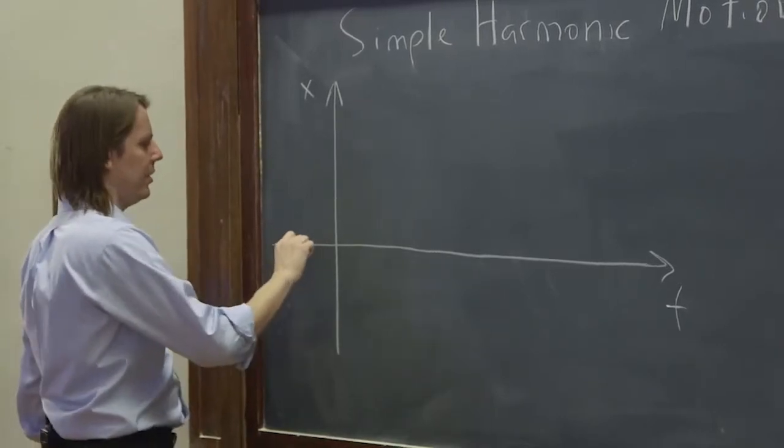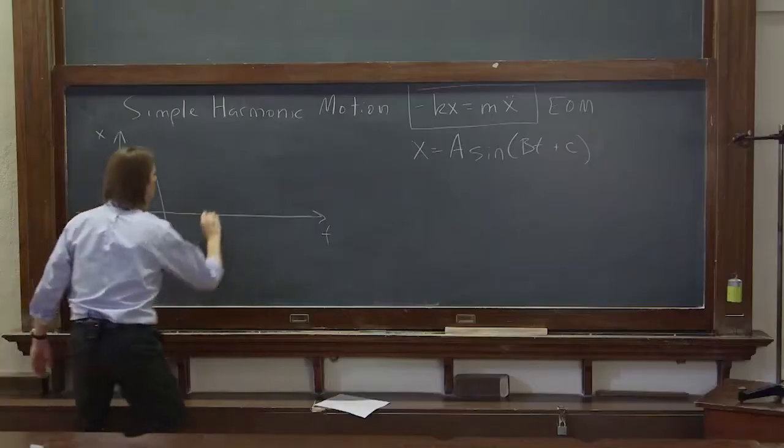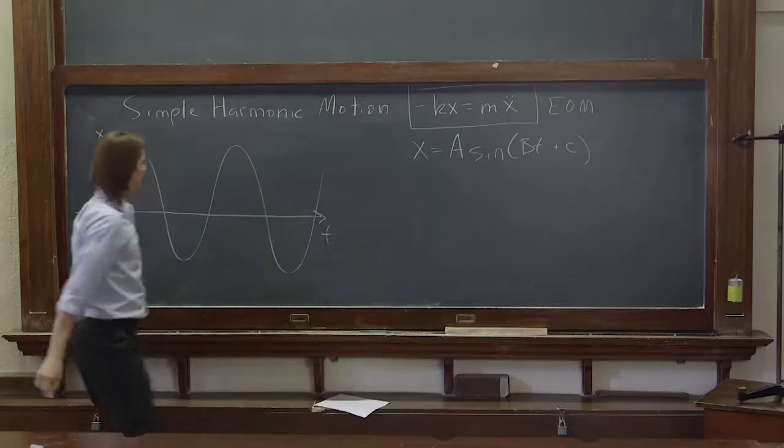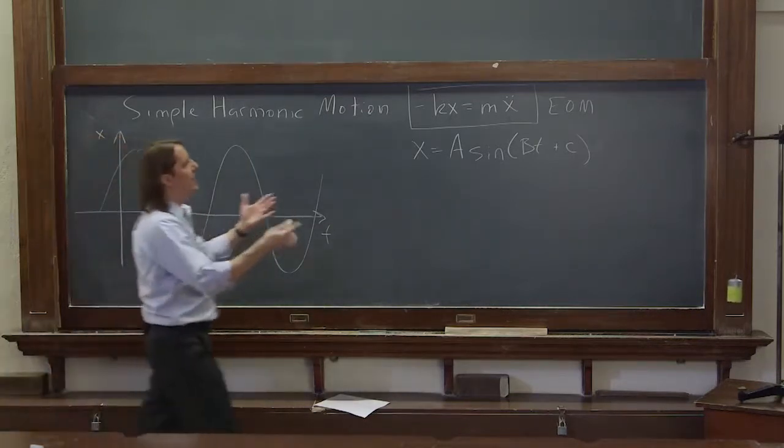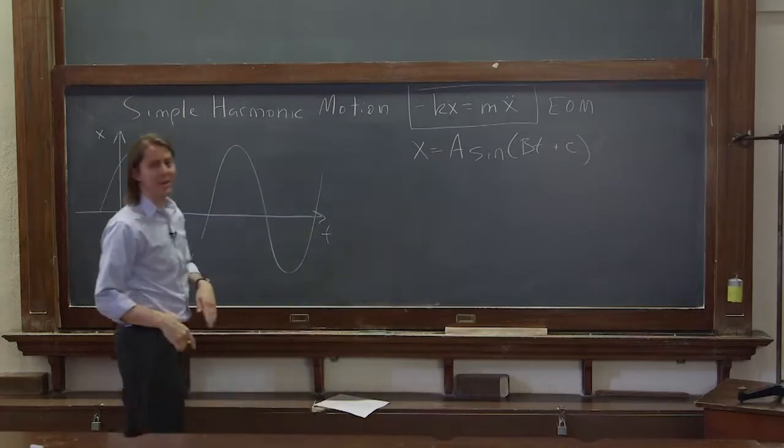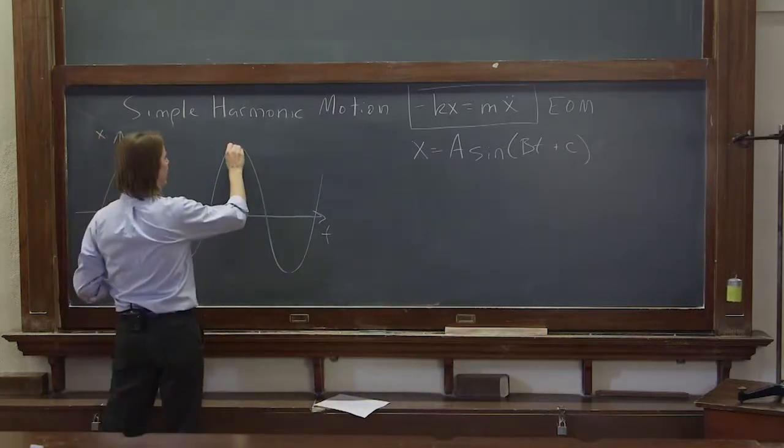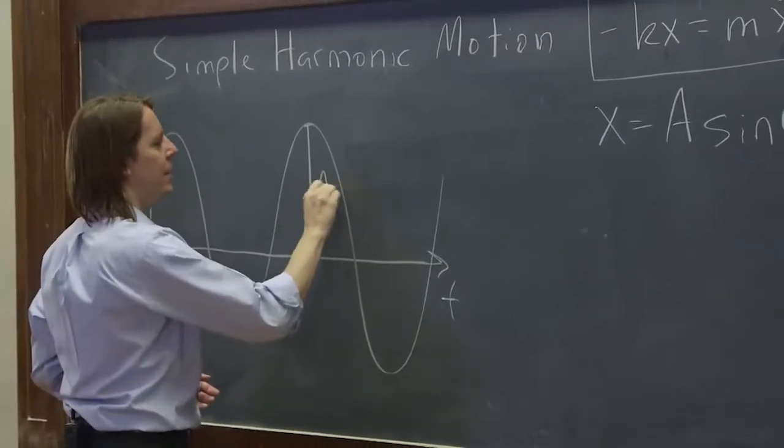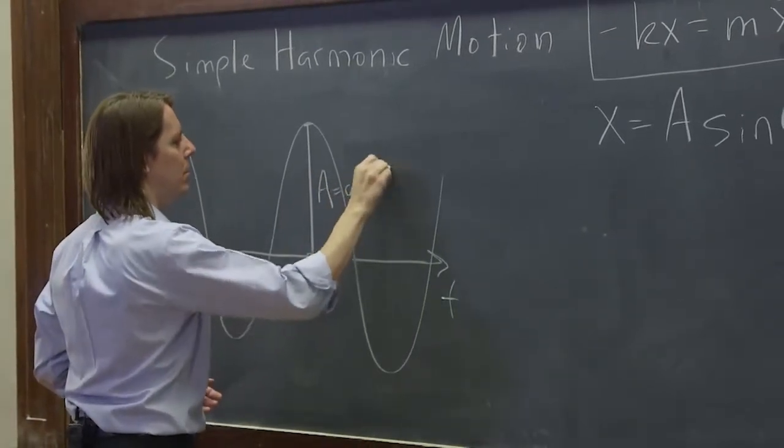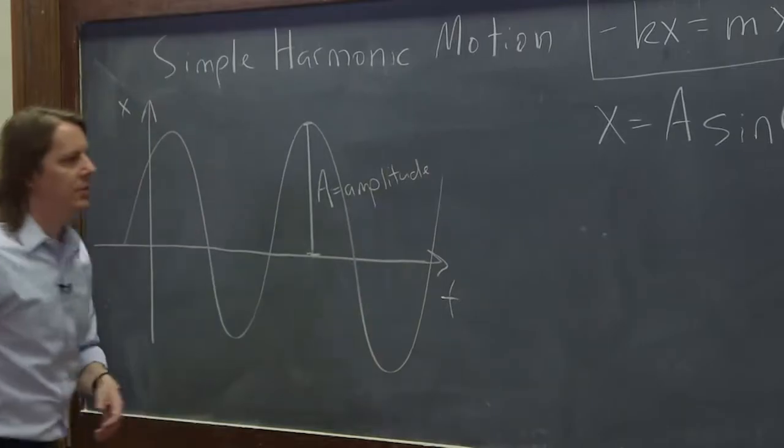And I'll start it out something like that. And when you look at it, let's do A first. So when you put A in front of a sinusoid like that, you know that's the amplitude of a sinusoidal function. So A is the amplitude.